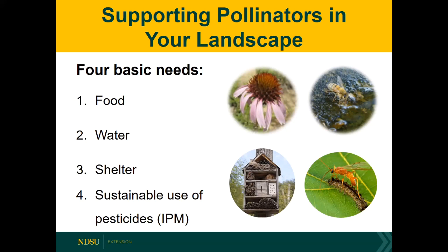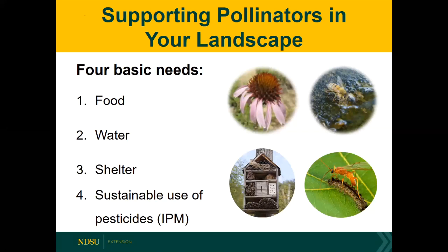When supporting pollinators in our landscape, we need to think about their four basic needs, just like we have. Their food source is nectar and/or pollen. They also need a source of water and some type of shelter, primarily for nesting and escaping predators. Their fourth need is the sustainable use of pesticides, which we refer to as integrated pest management.